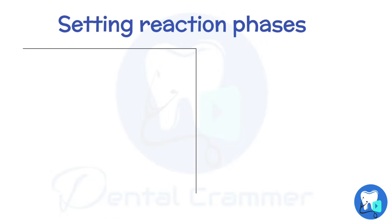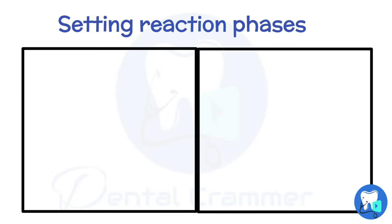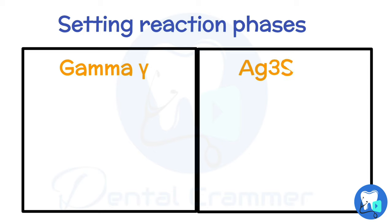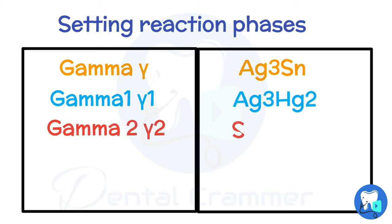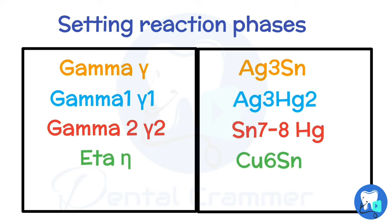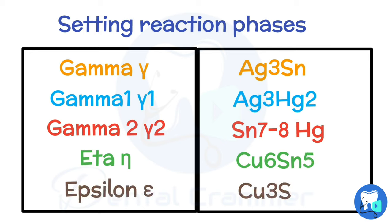The gamma phase is the strongest phase of amalgam and comprises silver and tin. Gamma 1 phase is the second strongest phase, comprising silver and mercury. Gamma 2 phase, comprising tin and mercury, is the weakest phase of amalgam. It is formed in low copper alloys, whereas in high copper alloys the gamma 2 phase is largely replaced by the eta phase containing copper and tin. The setting reaction will be discussed in detail in the next video.